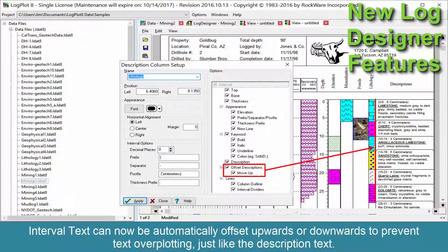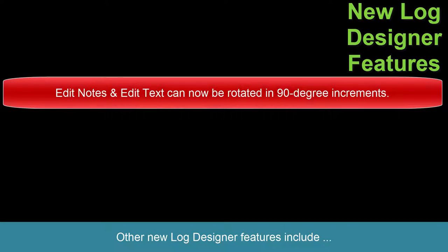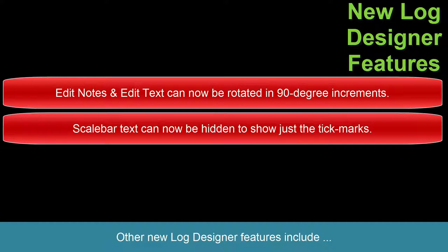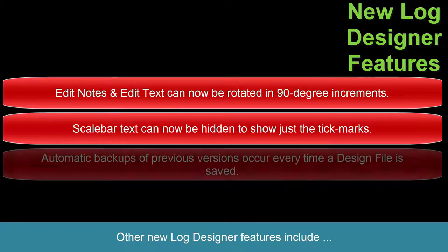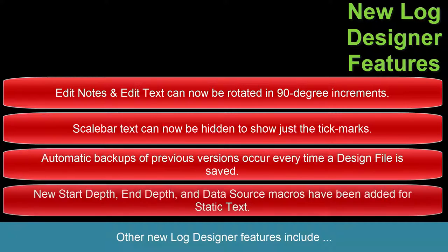Interval text can now be automatically offset upwards or downwards to prevent text overplotting, just like the description text. Other new Log Designer features include edit notes and edit text that can now be rotated in 90-degree increments. Scale bar text can now be hidden to show just the tick marks. Automatic backups of previous versions occur every time a design file is saved. And new Start Depth, End Depth, and Data Source macros have been added for static text.